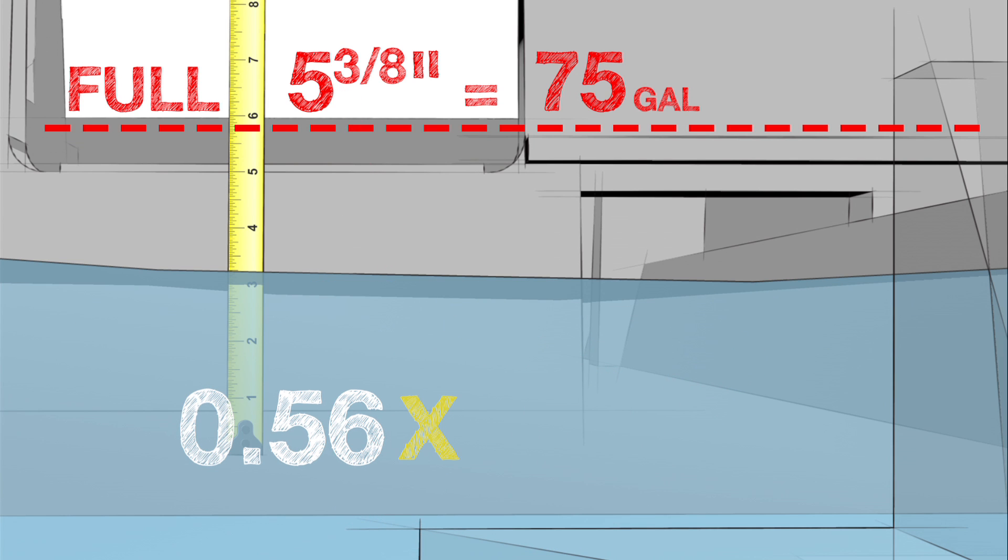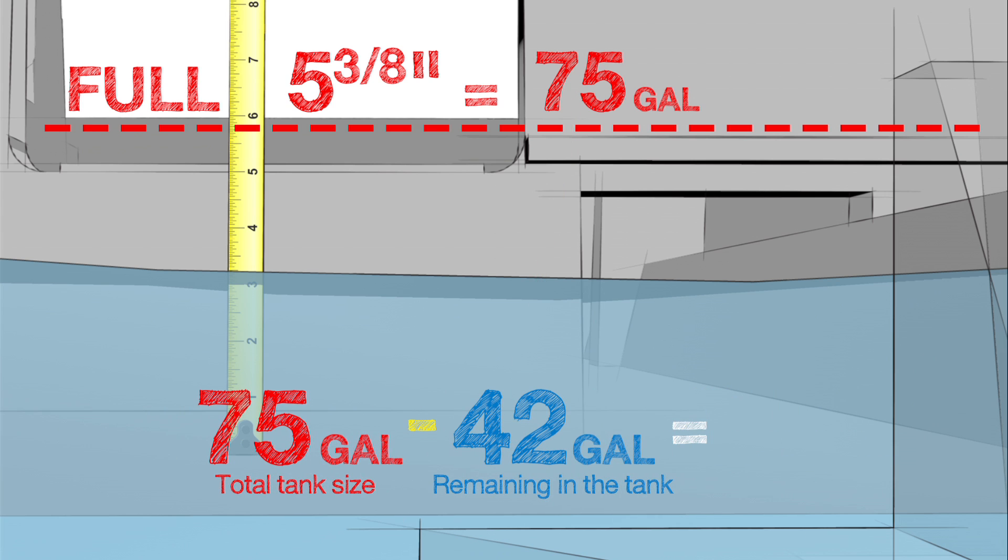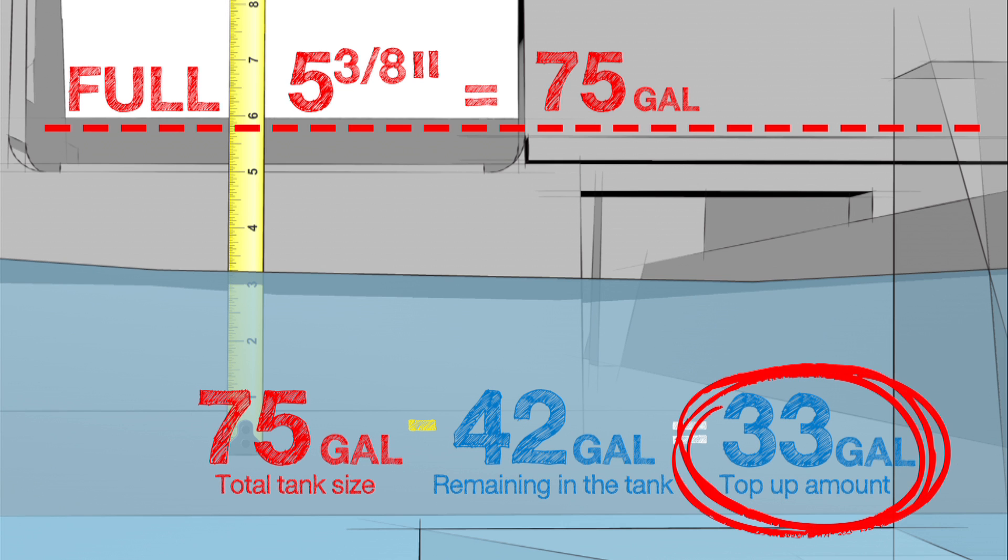Multiplying the 0.56 value times our 75 gallon tank size equals 42 gallons remaining in the tank. We subtract 42 gallons from our total tank size of 75 gallons, leaving us with 33 gallons that need to be made up.